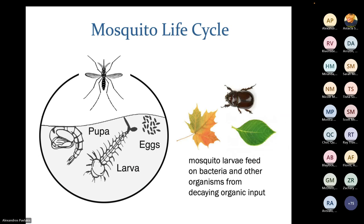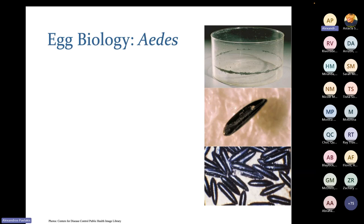Going over their life cycle, a majority of these life cycle stages take place in the water. Mosquitoes lay their eggs in the water. From those eggs, the larvae emerge and eat bacteria and other organisms from decaying organic matter to grow. Then they develop into their pupal stage, and finally emerge into the adult mosquito stage. The majority of their life cycle is happening in the water.